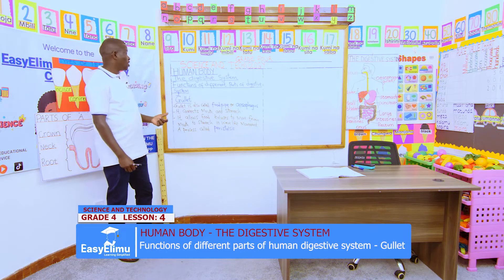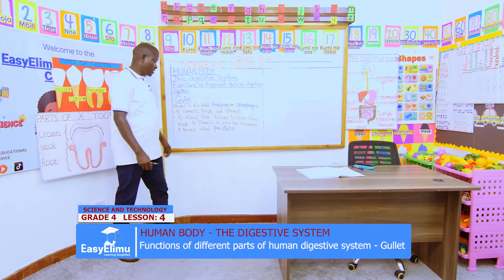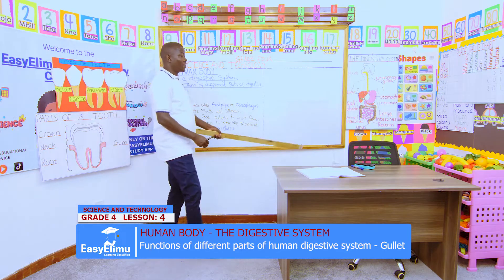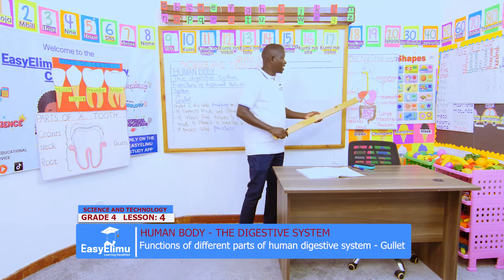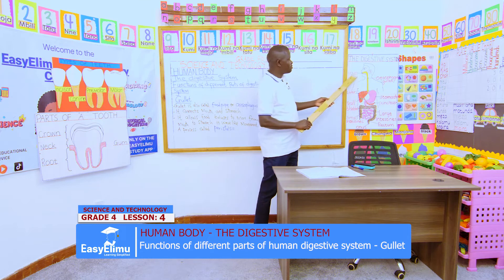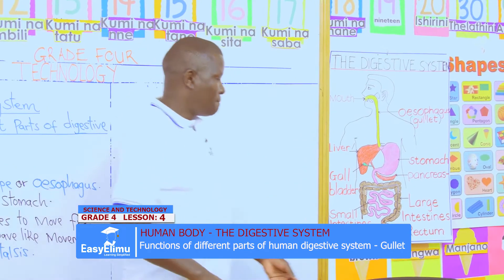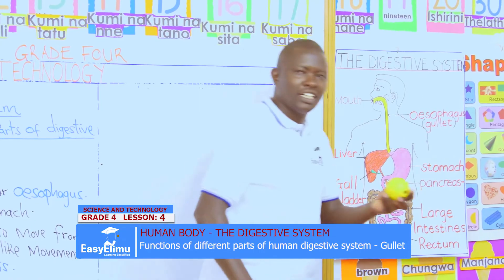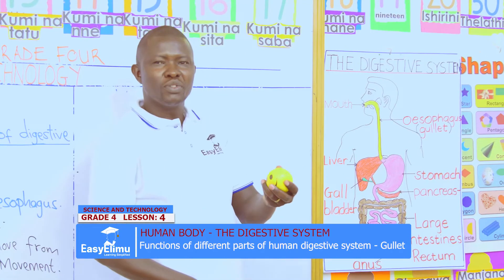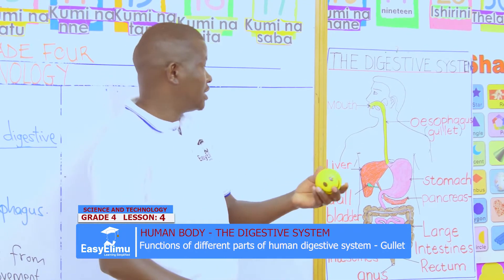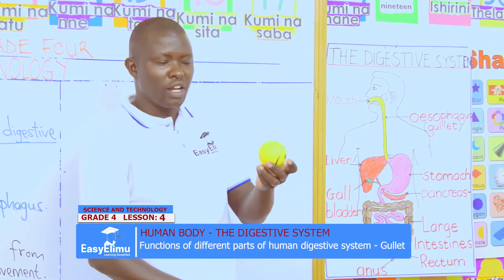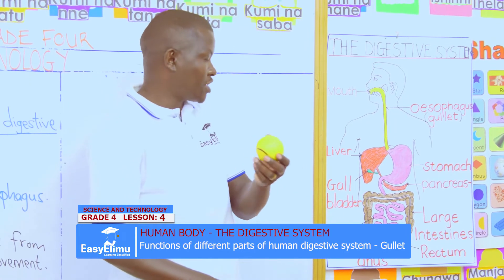We are looking at the functions of the gullet as a part of the digestive system. We said when food has been chewed in the mouth, mixed with saliva, it forms boluses — bowl-like food which has been compacted together to form balls, but in smaller pieces, smaller particles.